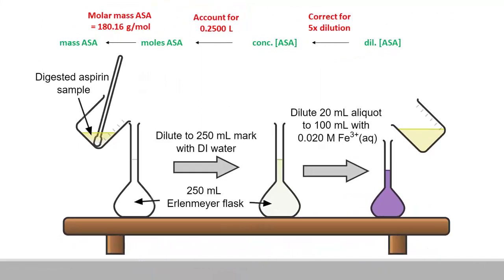To find the mass of acetylsalicylic acid in the tablet, it is helpful to recall how the aspirin solution was prepared. Starting on the right side of this diagram, we now know the concentration of acetylsalicylic acid in your diluted aspirin solution. Moving to the left,